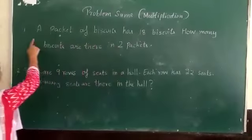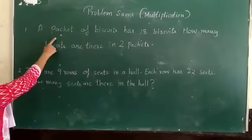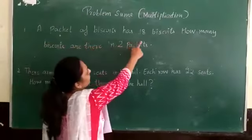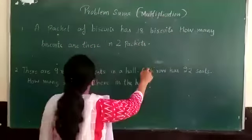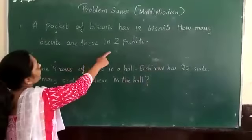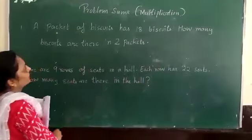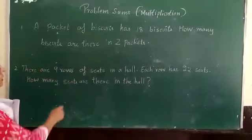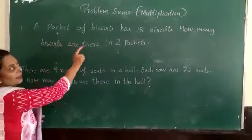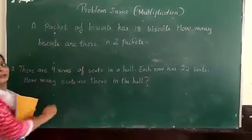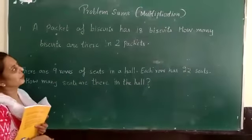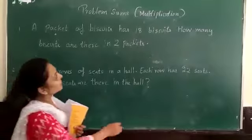Our first sum: packets of biscuits have 80 biscuits. There are 80 biscuits in 2 packets. If one packet is received, how many biscuits are received in two packets?